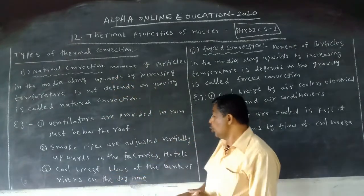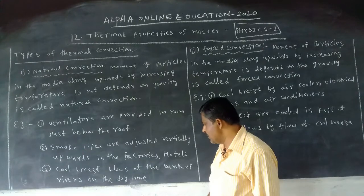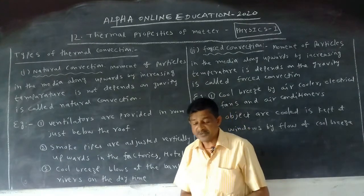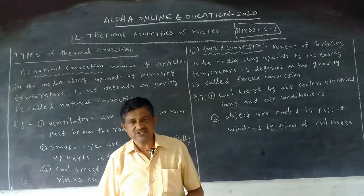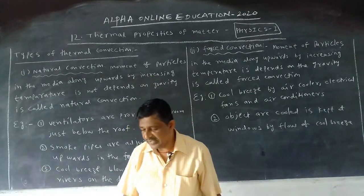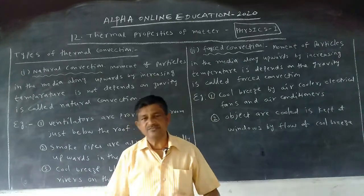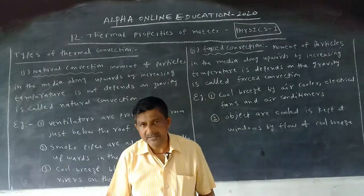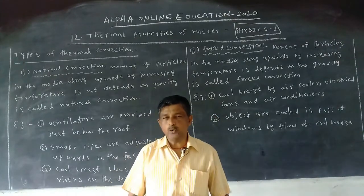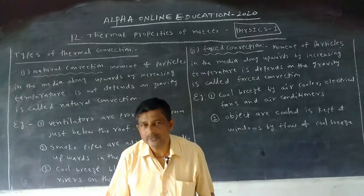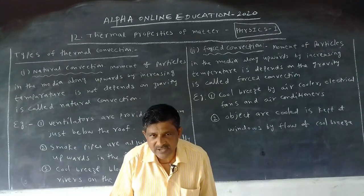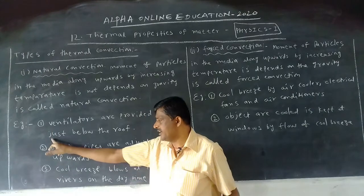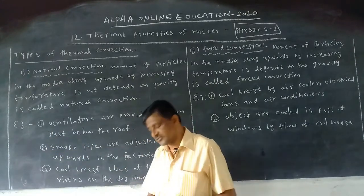Another example: cold breeze blows at the bank of rivers during the daytime. Especially if we sit at the banks of rivers and ponds, we will get a cold breeze during the daytime. We get this cold breeze due to natural convection.